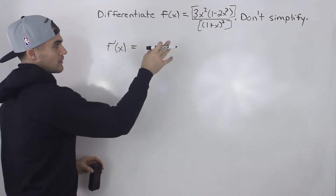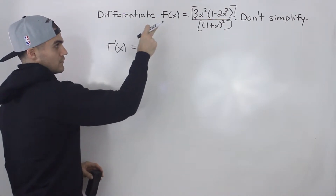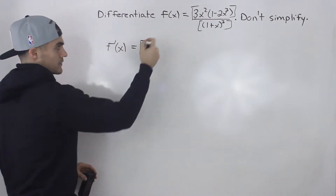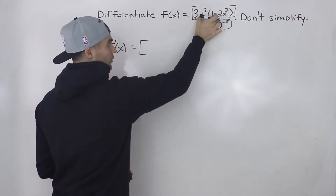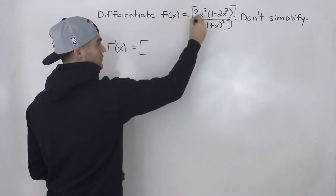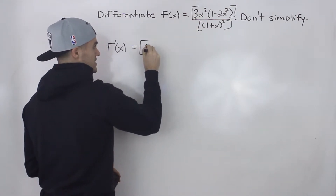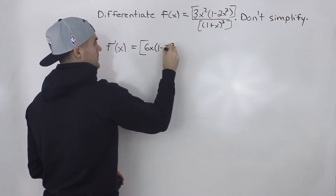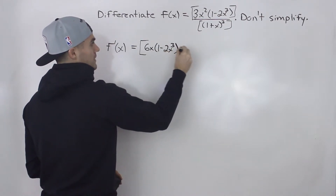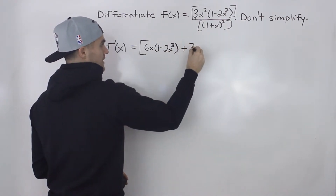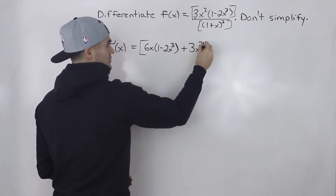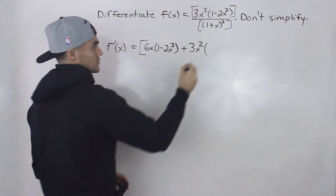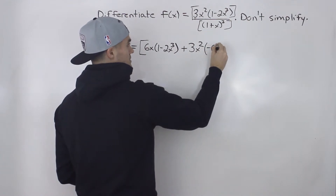First thing we do is apply the quotient rule. We take the derivative of the top function, but since the numerator is a product, we apply the product rule. The derivative of 3x squared is just 6x. We rewrite 1 minus 2x cubed. Then we add that function left as is, times the derivative of 1 minus 2x cubed, which would be negative 6x squared.